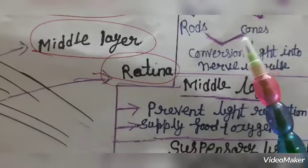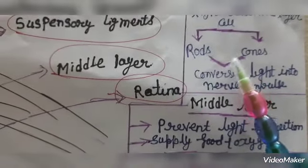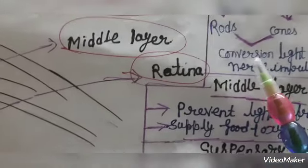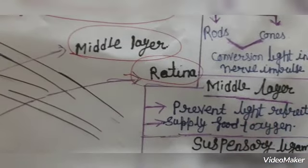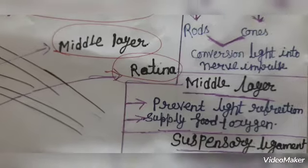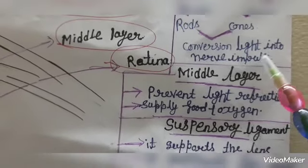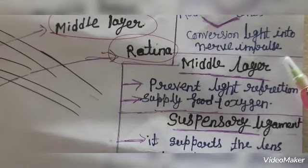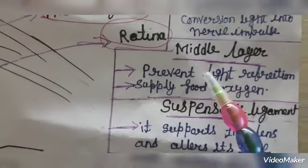It always comes in exams, where are rods and cones found. Rods and cones are cells found in retina. Its function is conversion of light into nerve impulse. The light is converted into nerve impulse and sent towards the brain.